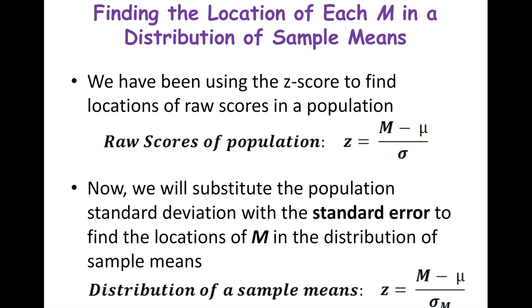At this point, we're using the z-score to find locations of raw scores or individual scores in a population, using z equals x-bar minus mu divided by standard deviation. Now, because we're dealing with groups of people and sample sizes, we substitute the population standard deviation with the standard error. So the z for that entire group is mean minus mu divided by your standard error.